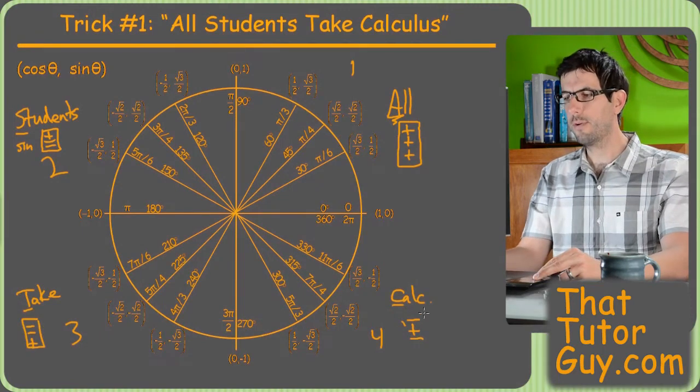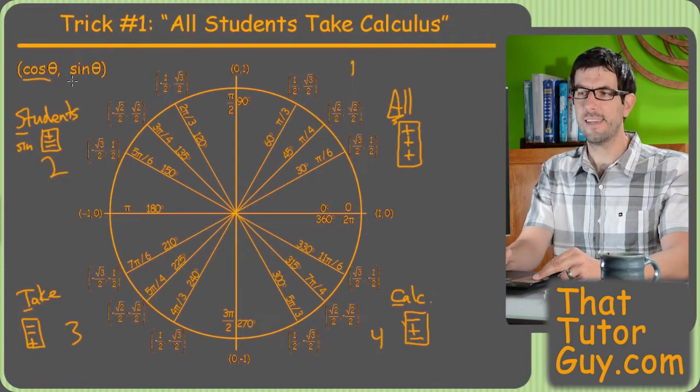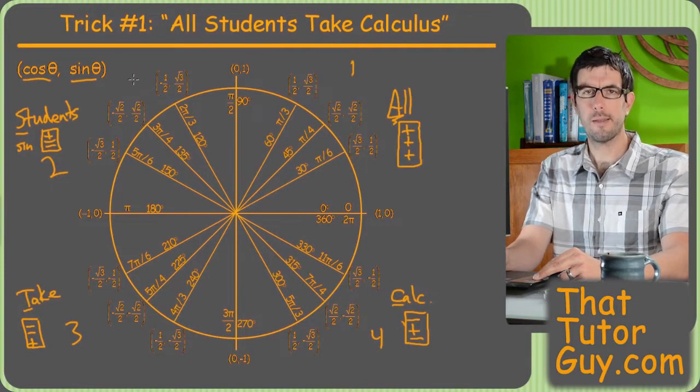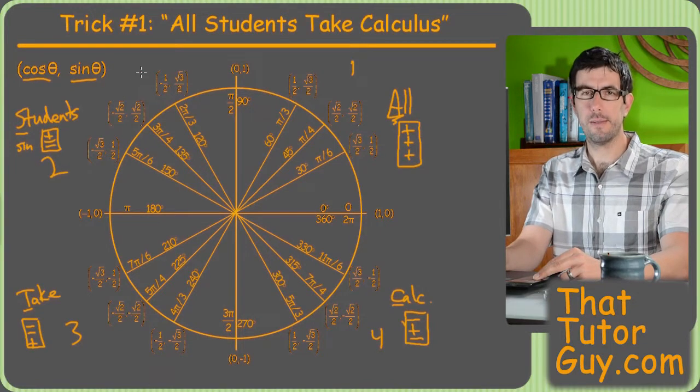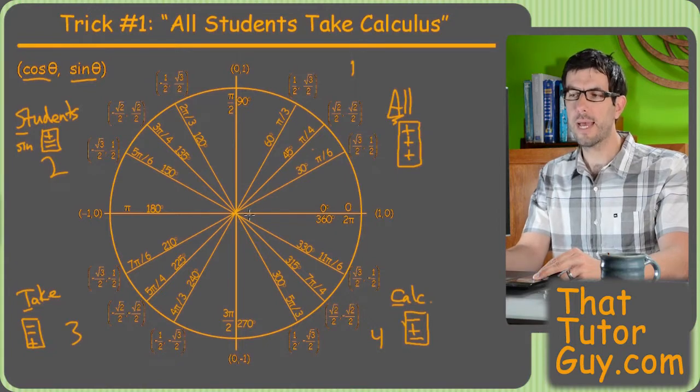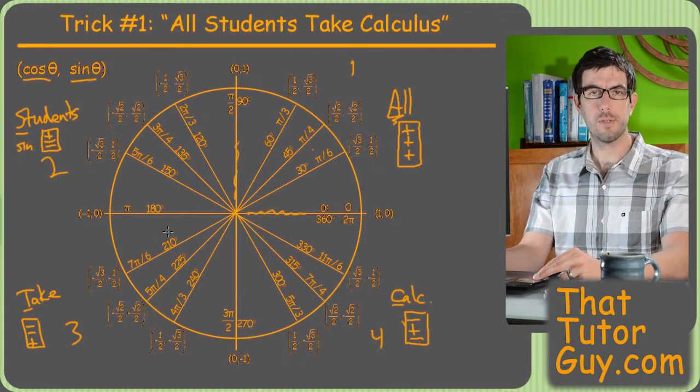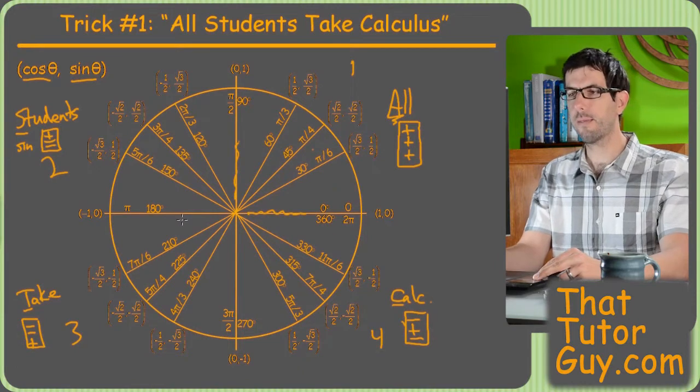And then the other thing is, if you know that cosine and sine are just the X and Y coordinates, you can just figure it out freshly for yourself each time. Because if you're in the first quadrant, you can kind of look at it and say, oh my X value would be positive and my Y would be positive. In the third quadrant, both X and Y are negative, therefore sine and cosine are both negative. That kind of thing.